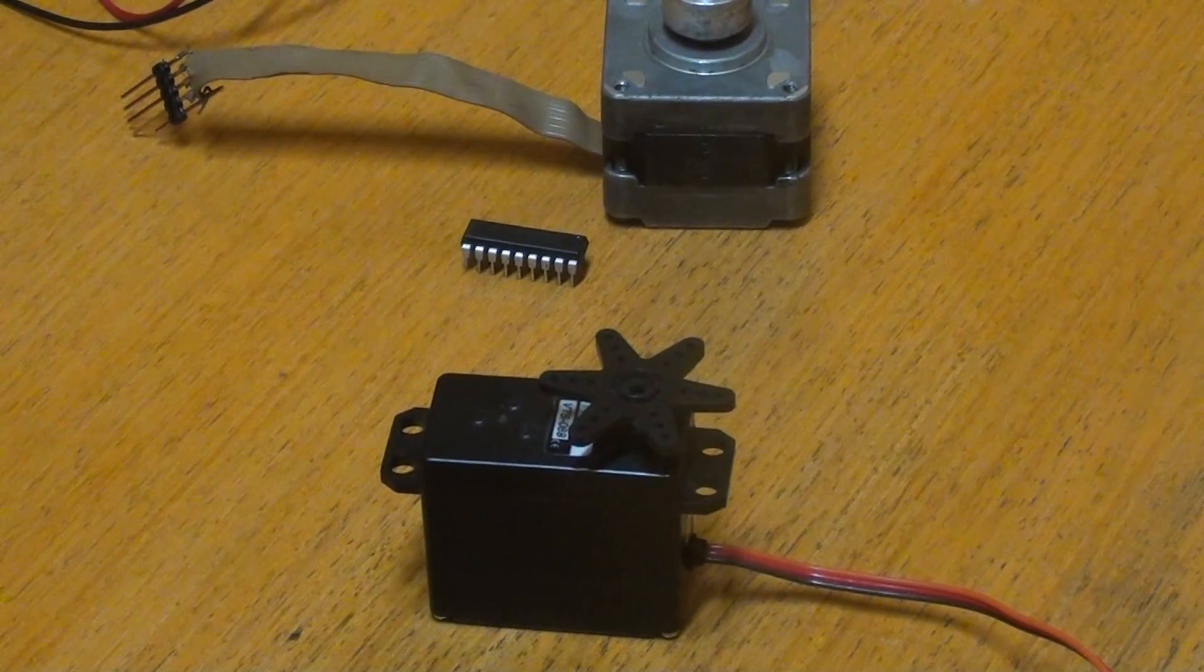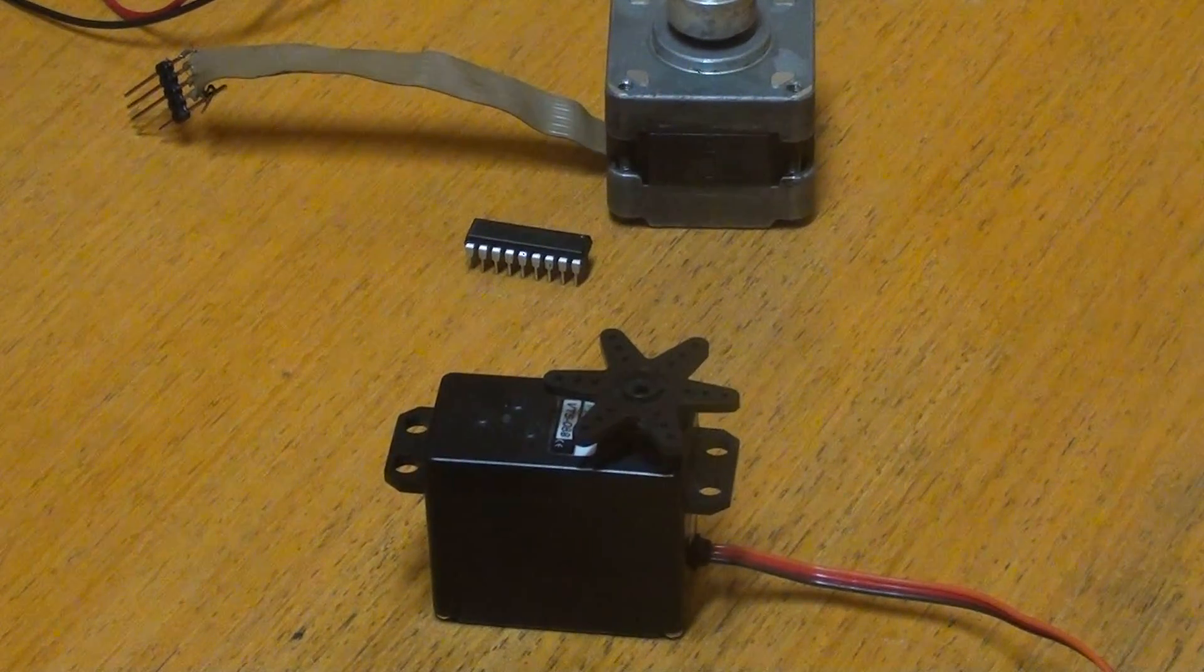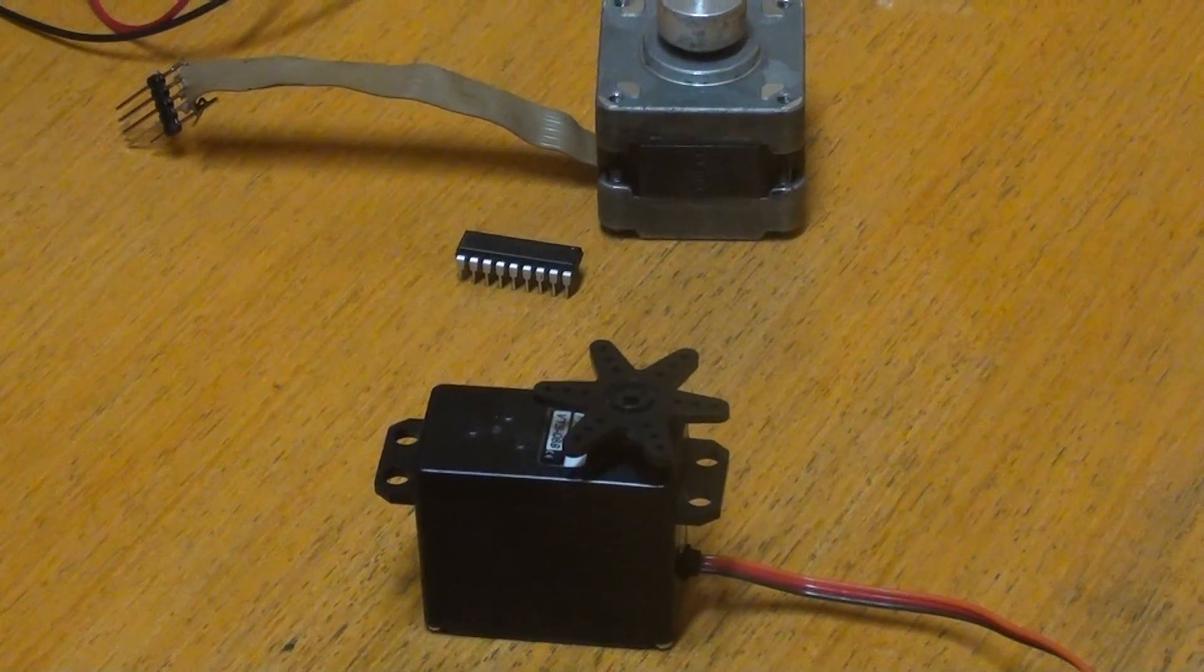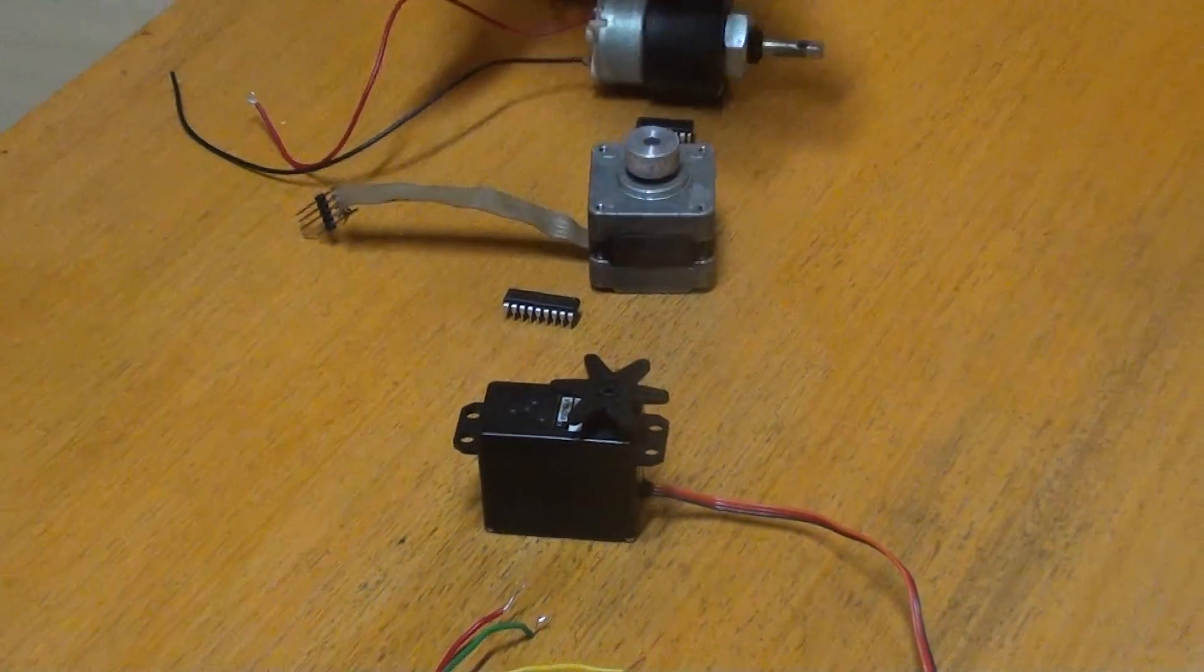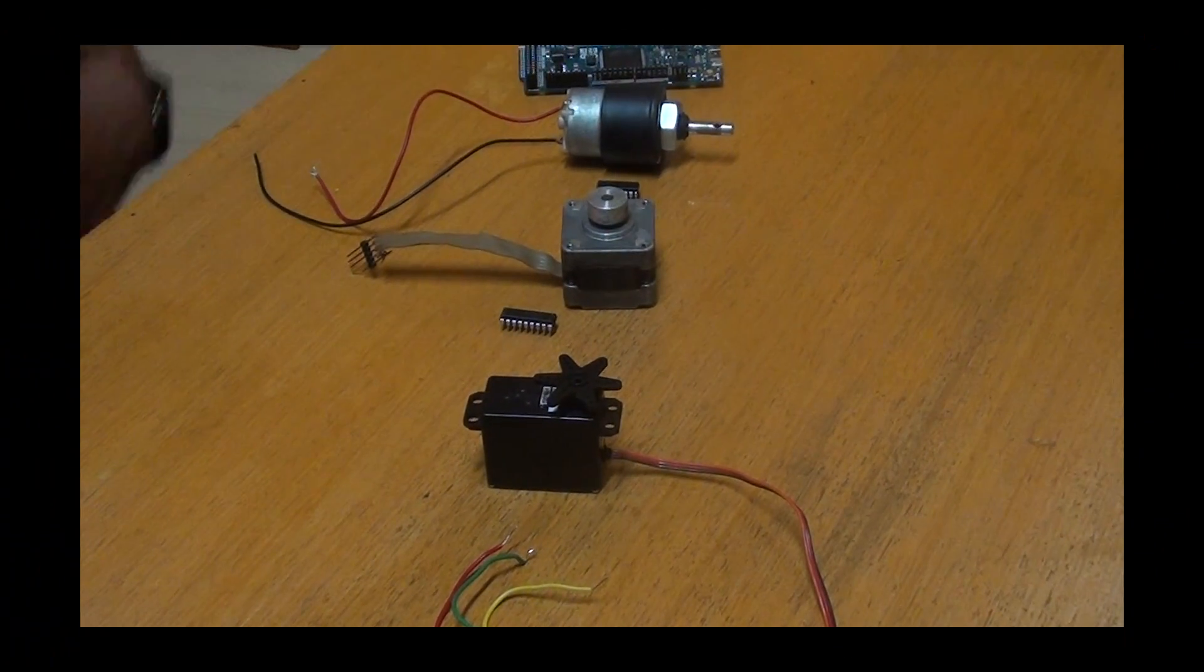A servo motor can usually only turn 90 degrees in either direction for a total of 180-degree movement. Now we'll see a simple demonstration of how we can interface each and every motor that I explained to you with the Arduino Doom and see how it works.